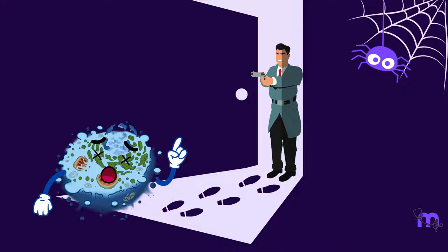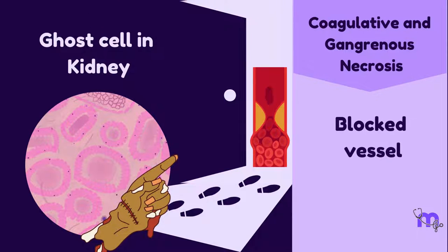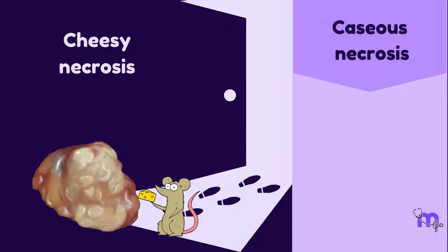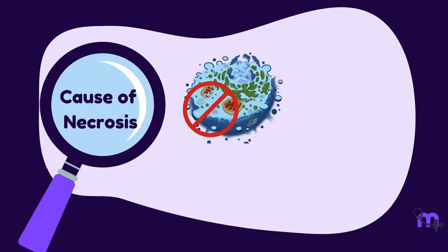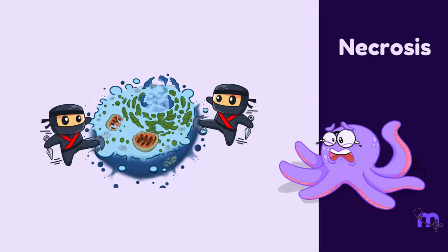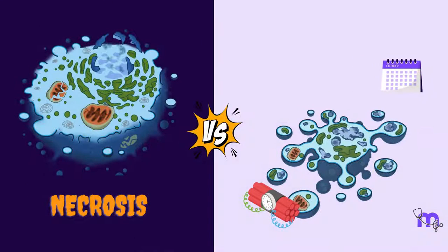Every dying cell lets out a final cry for help, a cry to avenge its murderer. A ghost cell in the kidney, spleen or heart, or a dry, shriveled, blackened finger points at a blocked vessel. Fibrin-like material in a blood vessel signals an ongoing immunological war. Cheesy necrosis identifies its assassin as Mycobacterium tuberculosis; an abscess filled with pus points towards an infection. Finding the cause of necrosis helps prevent further cell death with timely therapeutic interventions — although it might be too late for a liquefied brain on an autopsy table. If necrosis is cellular murder in broad daylight, what would you call a carefully planned assassination plot, or a cell that commits suicide? Look up our next video on apoptosis and how it differs from necrosis. We hope you had fun learning with us!